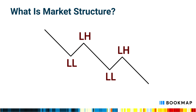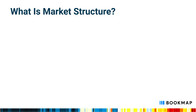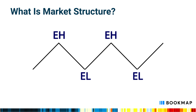Bearish market structure is where a sequence of lower lows and lower highs form a downtrend. Sideways market structure, or a ranging market, includes equal highs and equal lows.